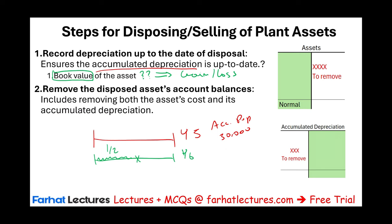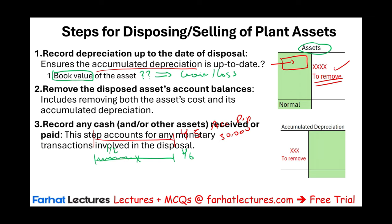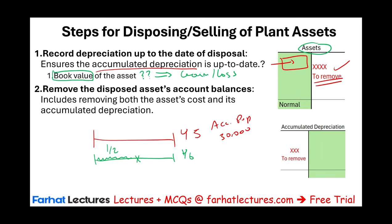Step two: remove the disposed asset. Assets have a debit balance, so to remove an asset you have to credit it. You also have to remove accumulated depreciation — accumulated depreciation has a normal balance of a credit, so to remove it you will debit it. So you will always have a credit to the asset and a debit to its accumulated depreciation whenever you dispose or sell an asset.